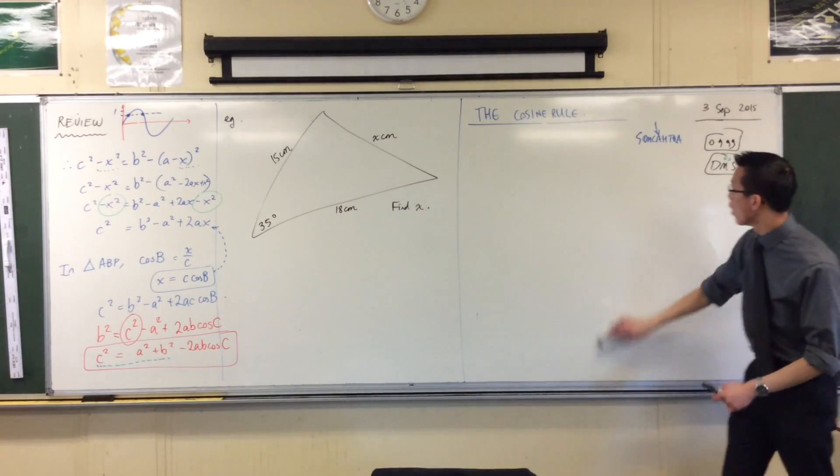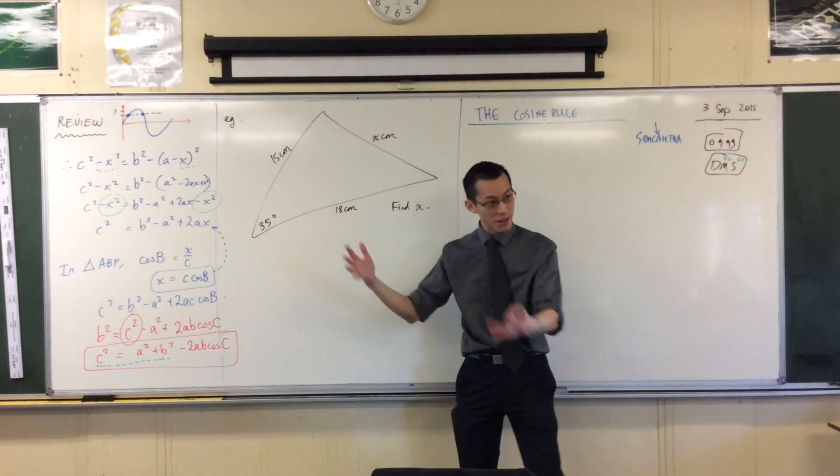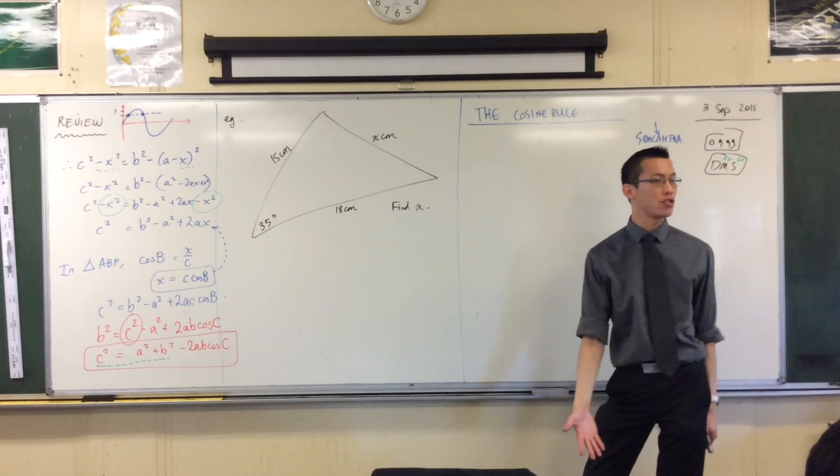This looks a lot like what we were doing before with the sine rule. It's not a right angled triangle, you've got some random measurements around and they want you to find an unknown.